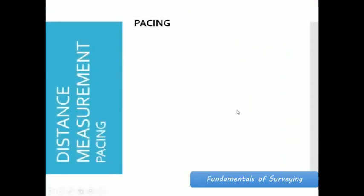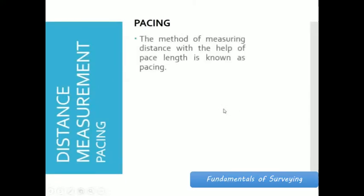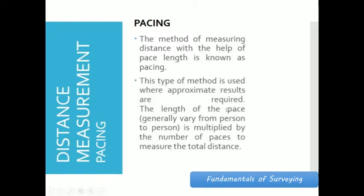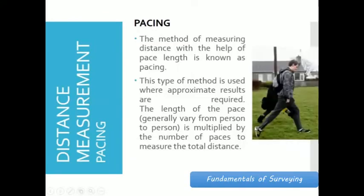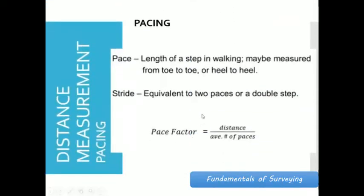We come now to the last method for distance measurement which is pacing. It is a method of measuring distance with the help of pace length. This type of method is used where approximate results are required, and the length of the pace generally varies from person to person. It is multiplied by the number of paces to measure the total distance. It's important for us to determine our pace factor to easily measure distances using our pace. Pace is the length of a step while stride is equivalent to two paces. To compute the pace factor, the measured distance is divided by the average number of paces. Therefore, we have a unit of meter per pace for pace factor.